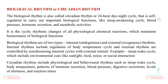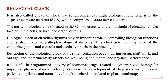The internal rhythms include regulation of body temperature cycle. External rhythms are controlled by synchronizing the internal cycles with external stimuli such as the sleep-wake cycle, which include environmental cues like sunlight, food, noise, or social interaction. The circadian rhythms include physiological and behavioral rhythms such as sleep-wake cycle, body temperature, patterns of hormone secretion, blood pressure, digestive secretions, levels of alertness, and reaction times.